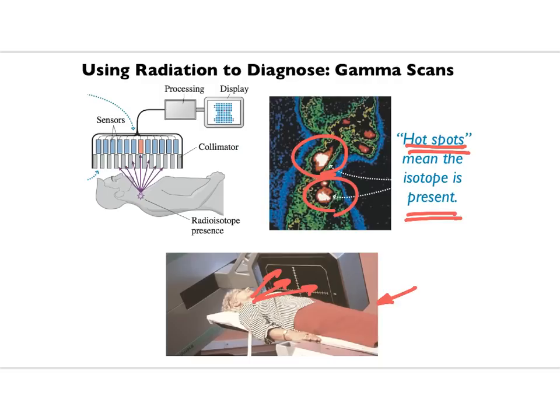You're not imaging the structure of the tissue — you're imaging the function. On an x-ray this might look fine, but the gamma scan says the spine is growing, and that is not normal. There's either a break, arthritis, or a tumor.